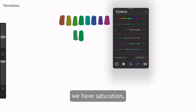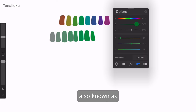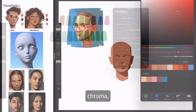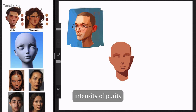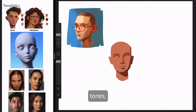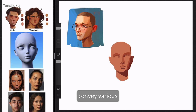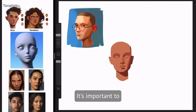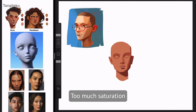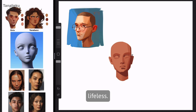Next, we have saturation, also known as chroma, which is the intensity or purity of a color. In terms of skin tones, subtle changes in saturation can convey various emotions. It's important to strike the right balance — too much saturation can appear unnatural, while too little can make skin look lifeless.